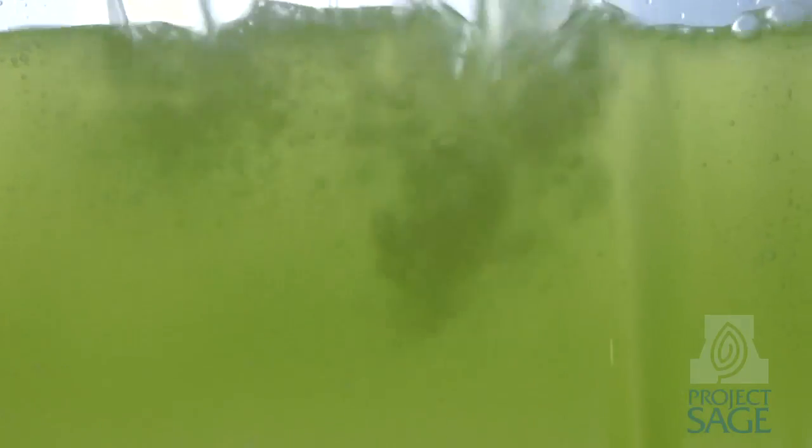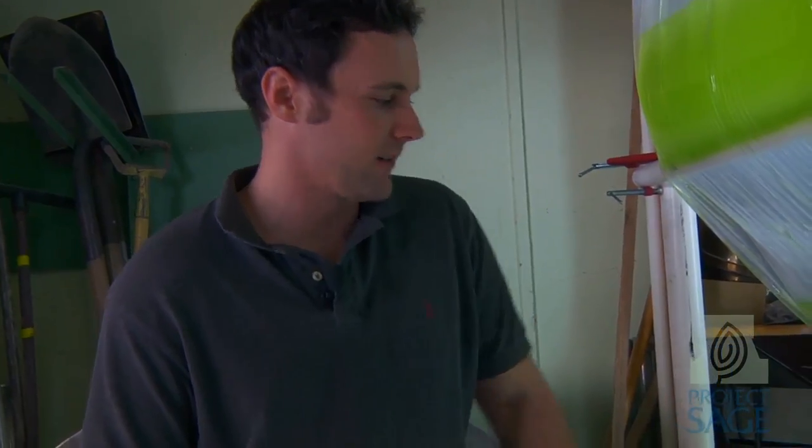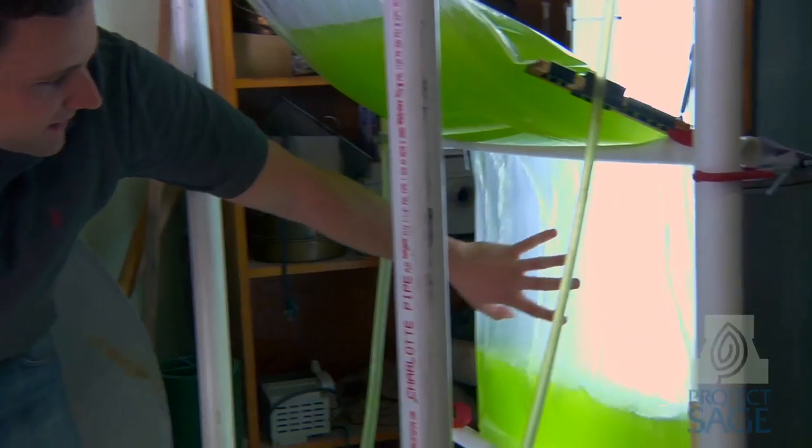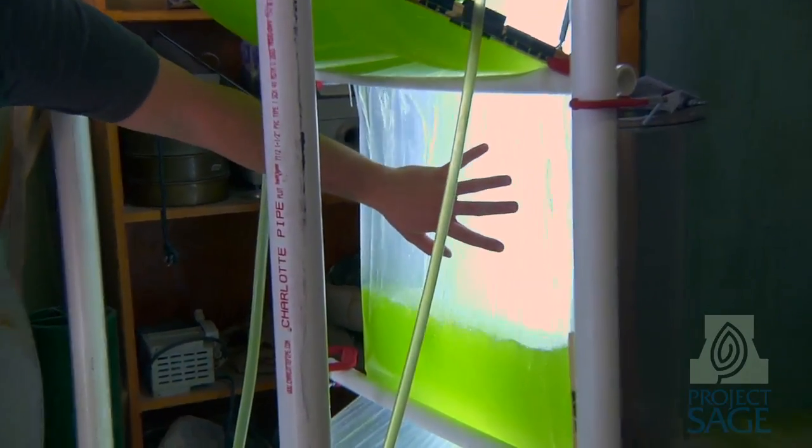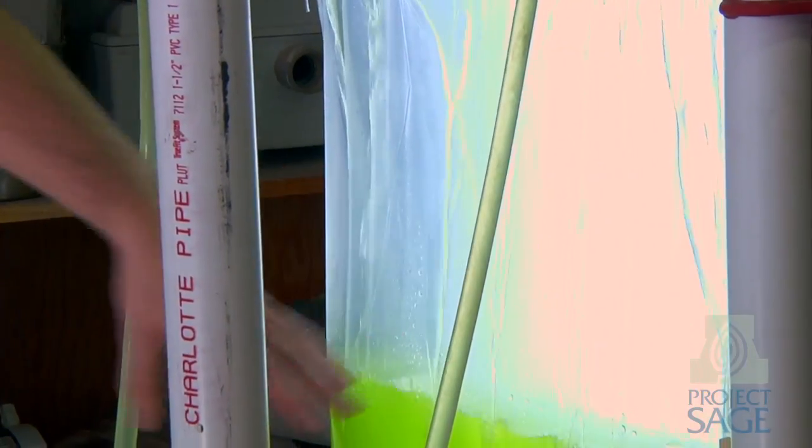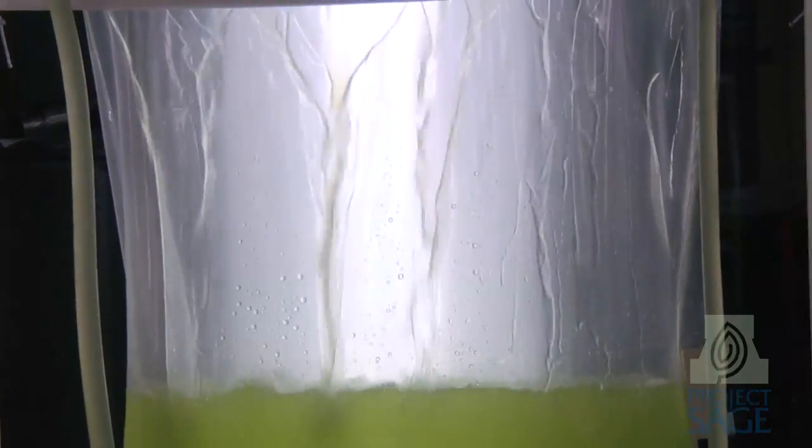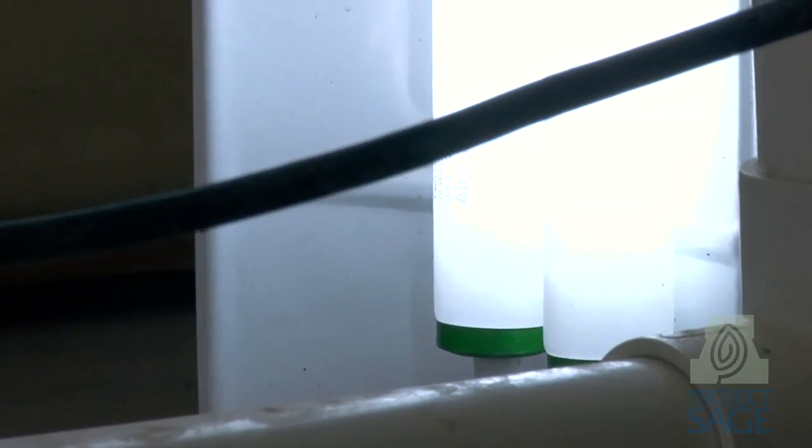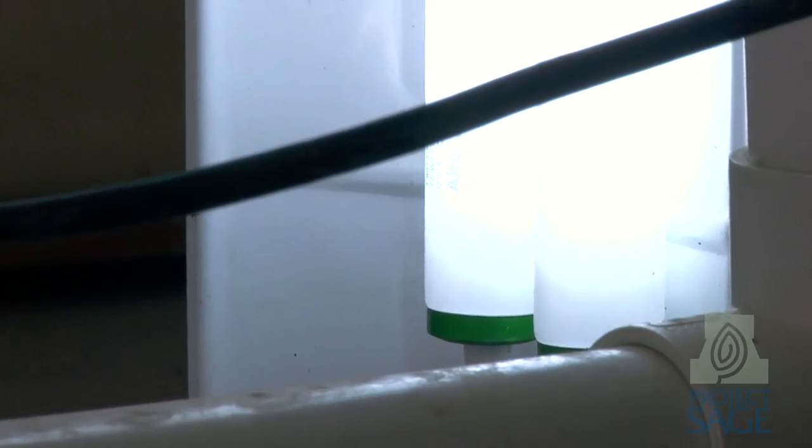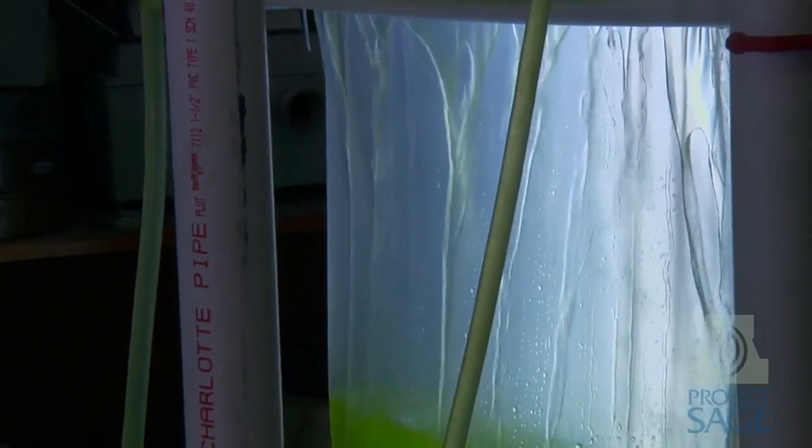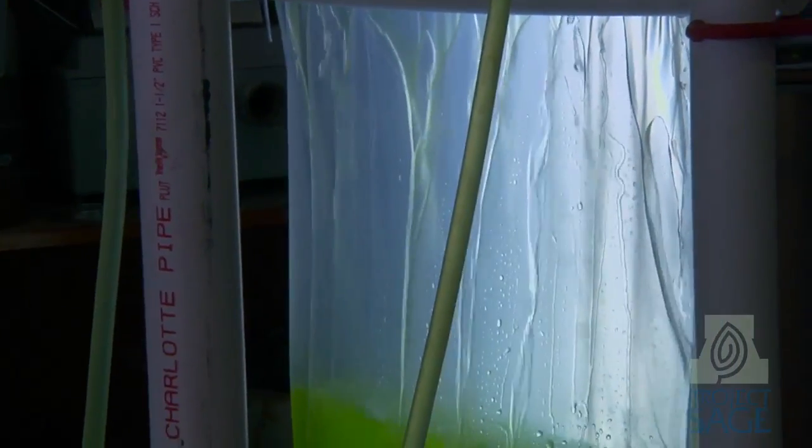The key characteristics of the accordion photobioreactor is the use of transparent materials. As you can see, we're using transparent plastic which allows sunlight to penetrate into the fluid. The sunlight interacts with the algae, leads to photosynthesis. That's what causes the algae to grow. That's the energy source we're using to get growth from the algae, and that's where the energy comes from that we're able to turn into biofuel.